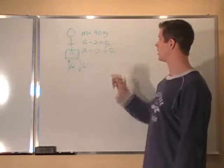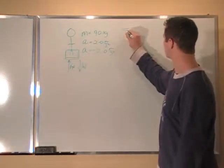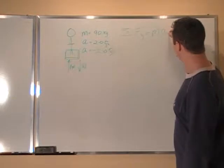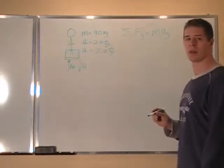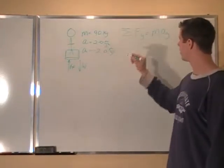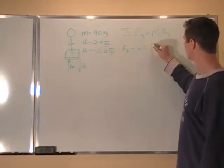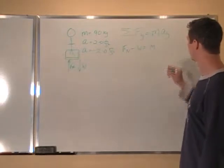Now, we have two possible scenarios, so let's just do sum of the forces. Sum of forces in the Y direction equals M times acceleration Y. So, forces we have are FN minus W equals M times acceleration Y.